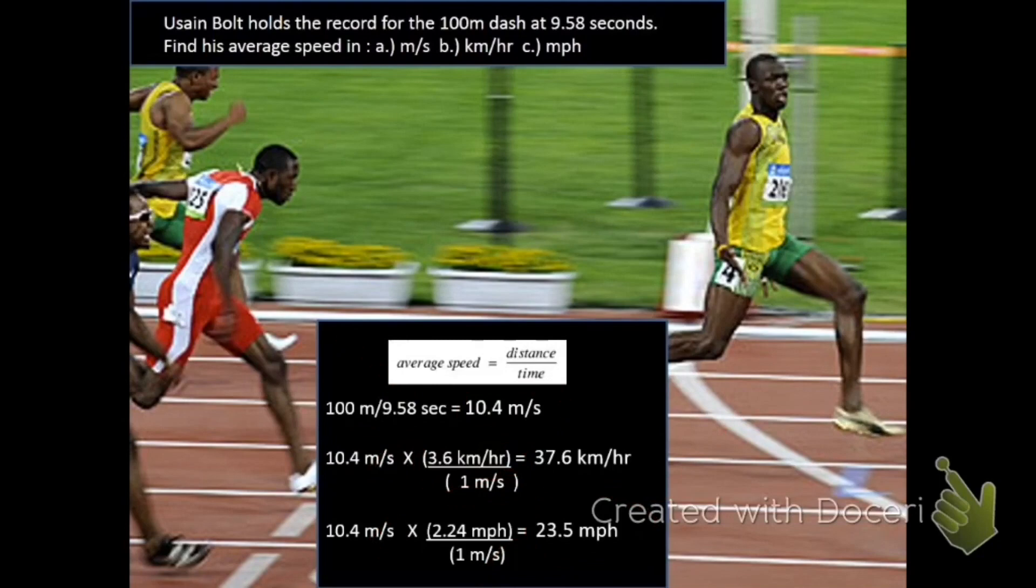So hopefully now you can answer the questions, how far has something traveled and how fast is it going, in terms of distance, abbreviated with d, and average speed, an s with a bar over the top. We'll get into more details about other ways to talk about moving objects in our next discussion.